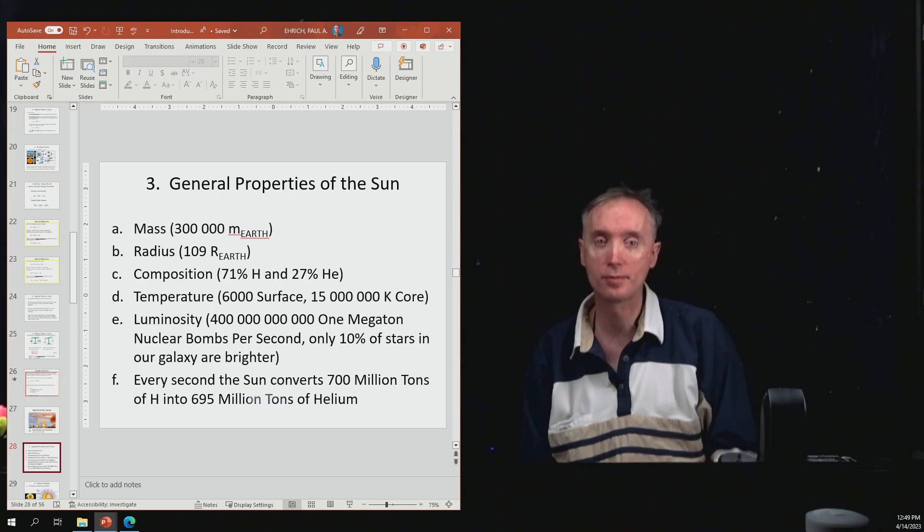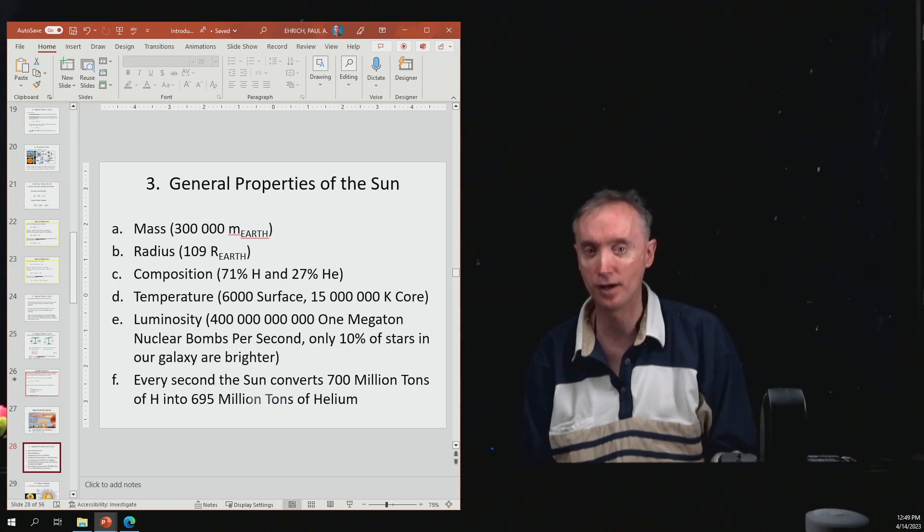All right, so let's talk about general properties of the Sun. Mass, big. Radius, big. All right, that's all you need to know. All right, what about the composition?